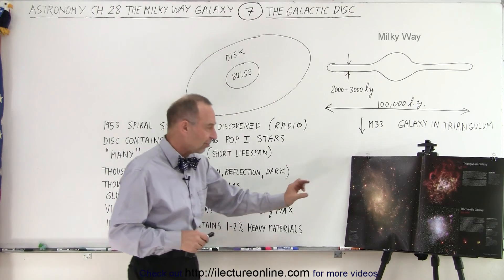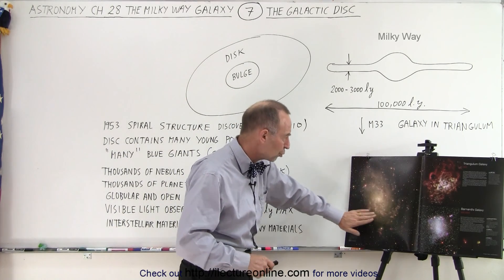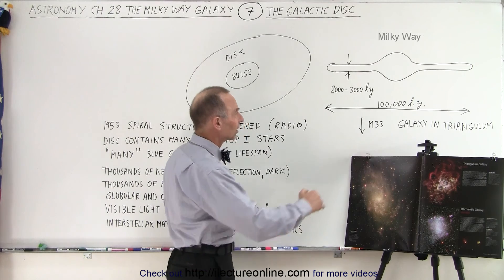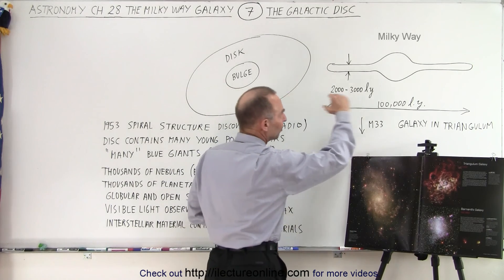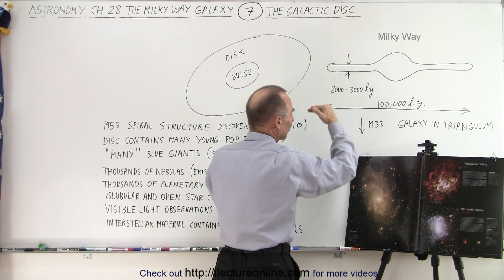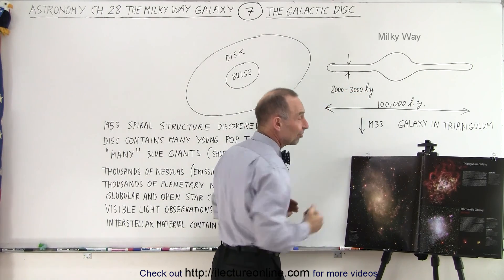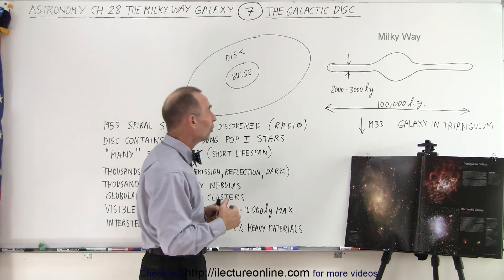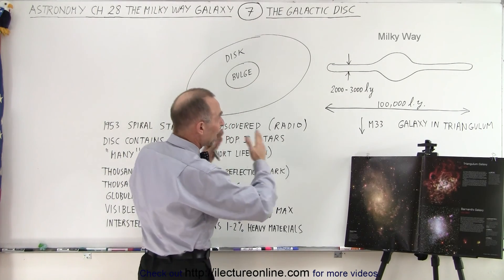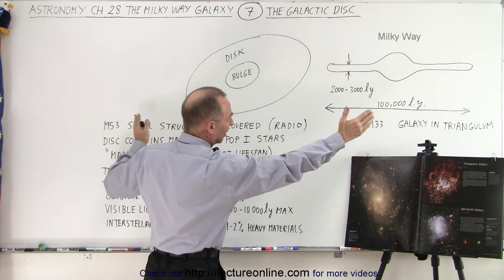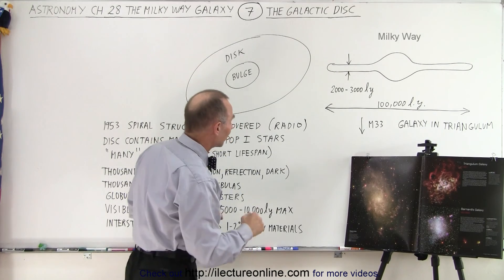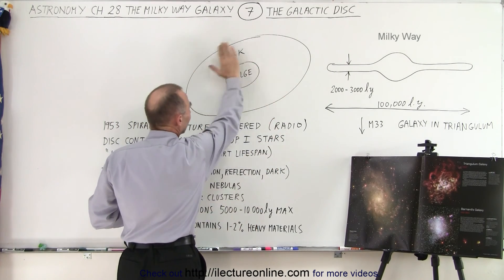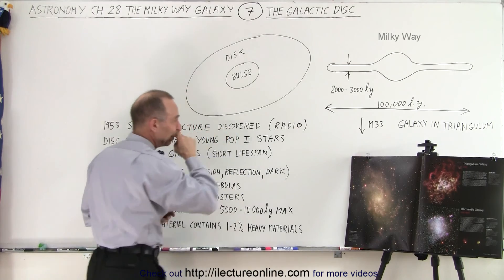It has the bulge at the center, and then it has this huge region around it which makes up the galactic disk. The galactic disk tends to be very thin, about 2,000 to 3,000 light years thick, although that's still an enormous distance. For the Milky Way galaxy, it spans out about 100,000 light years across. So here we have the bulge, and then we have the disk around it.